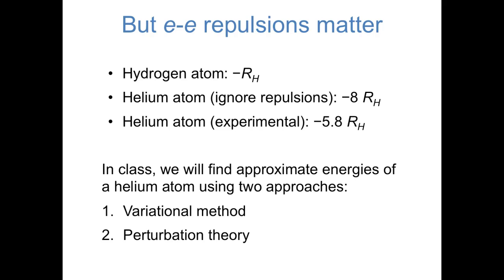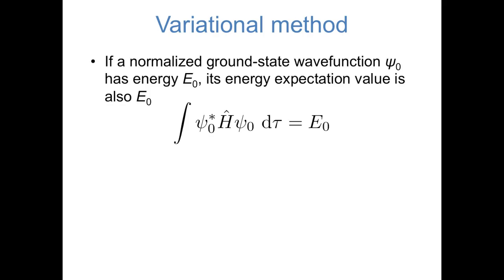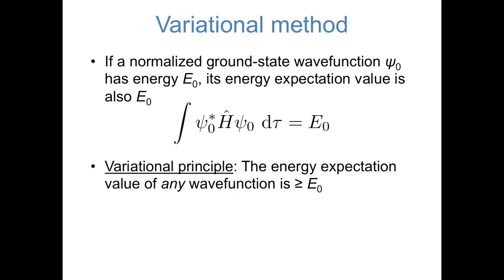In the next few slides, I'd like to at least talk qualitatively about what these methods are and how they work. I'll first talk briefly about the variational method. Way back when we introduced the postulates of quantum mechanics, we introduced the idea of an expectation value — the average value of a given property over a large number of measurements. Suppose a system has a ground state energy of E0, corresponding to a normalized ground state wave function psi0. If that system is in its ground state wave function psi0, its energy expectation value has to be E0.